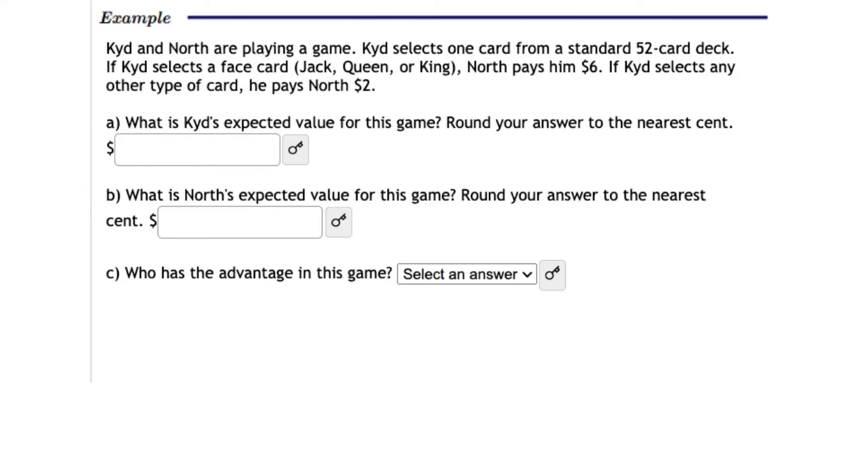Kid and North are playing a game. Kid selects one card from a standard 52-card deck. If Kid selects a face card, namely a Jack, Queen, or King, North pays him $6. If Kid selects any other type of card, he pays North $2. What is Kid's expected value for this game? What is North's expected value for this game? And who has the advantage in this game?